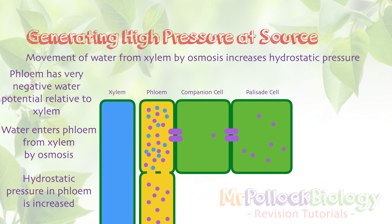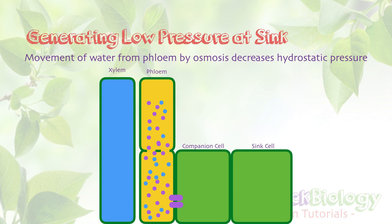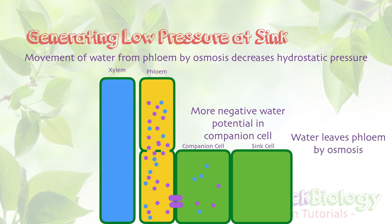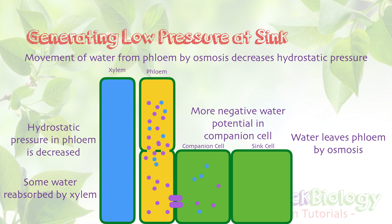The third and final stage is generating a low pressure at the sink. We move sucrose out of the phloem by active transport into the companion cell. This results in a more negative water potential in the companion cell relative to the phloem, so water leaves the phloem by osmosis. Some water is also reabsorbed by the xylem. The key result is that we have now reduced the hydrostatic pressure in the phloem — so the water pressure at the sink end is much lower.